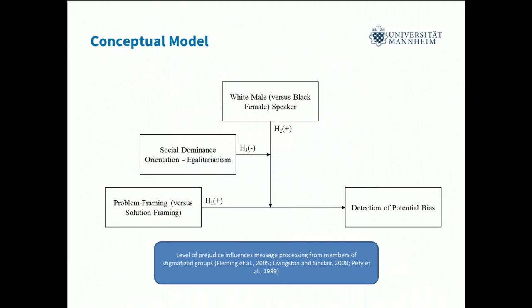This is our conceptual model. Our first hypothesis was that we expected the problem framing to be superior to the solution framing when it comes to the detection of potential bias — that is, whether the programmer mentioned diversity or not as our dependent variable. We expected this because the biggest predictors of pro-social behavior are guilt, fear, and shame. This was confirmed in our results.